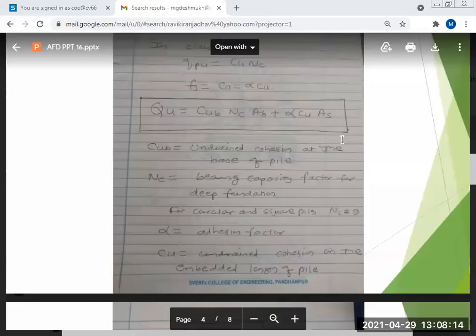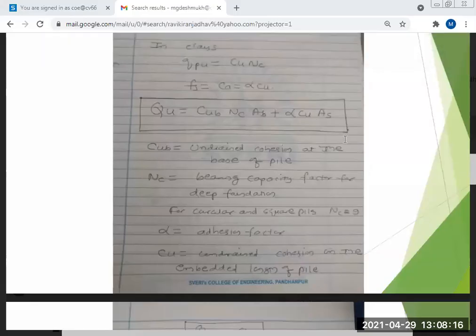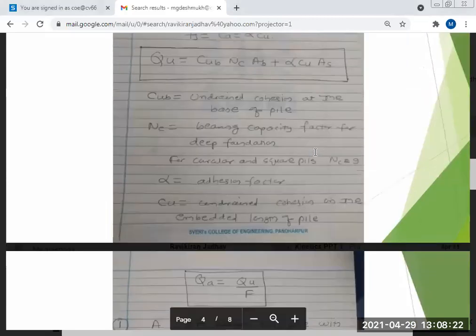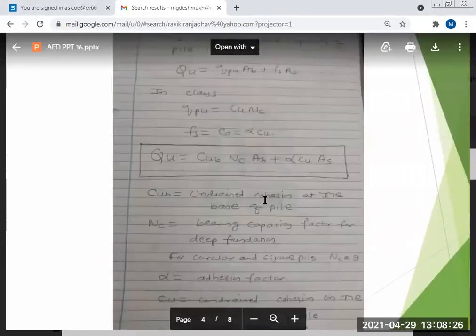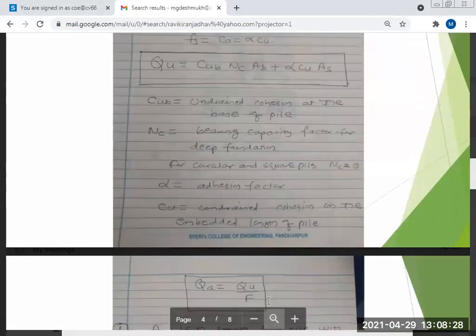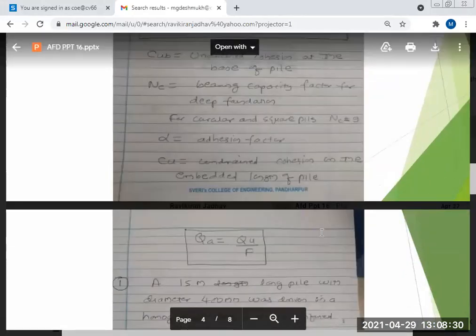Directly you can take these as C. So now Cn, Ca, b plus alpha C. As problems on this one I already solved, whatever you will get this is ultimate load. If you want safe load you divide by factor of safety, you will get it.